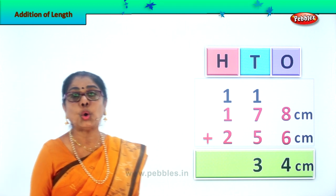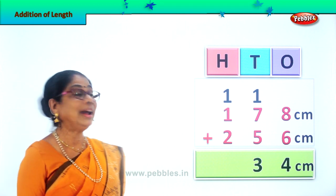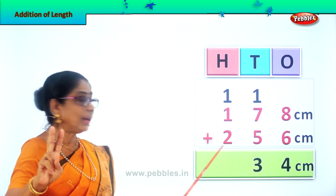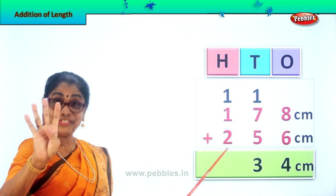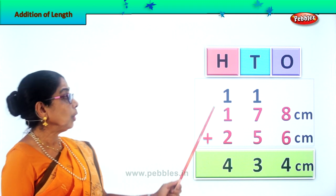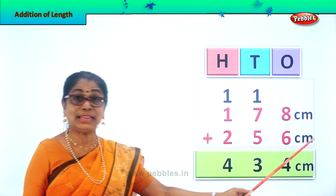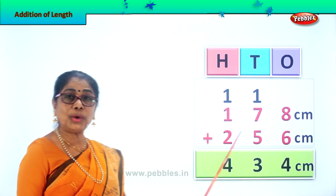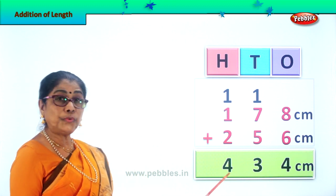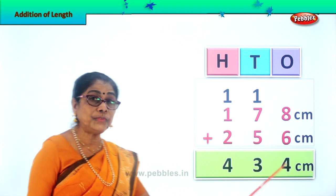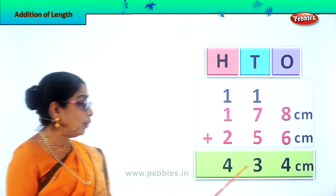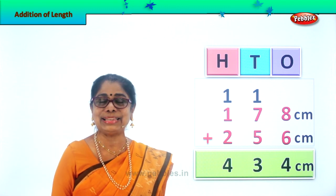Now let's add all that is in the 100's place. 1 plus 1 is 2. 2 plus 2 is 4. So we write down 400 here. 178 centimeters plus 256 centimeters together is equal to 434 centimeters. That's your answer — 434 centimeters.